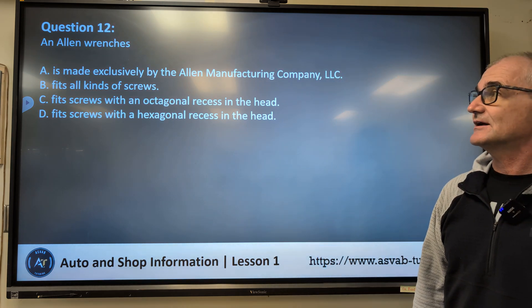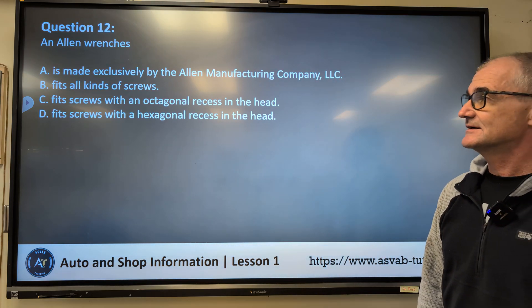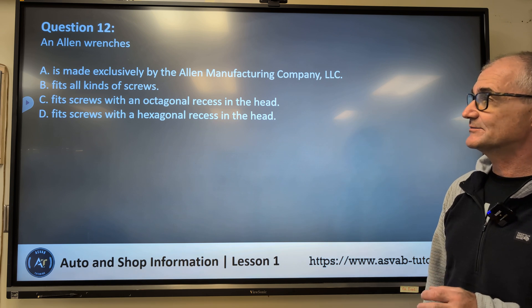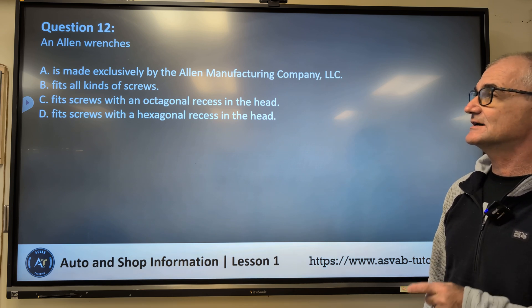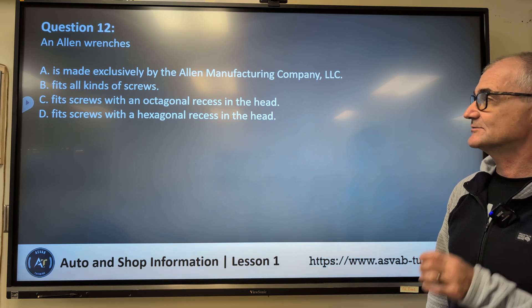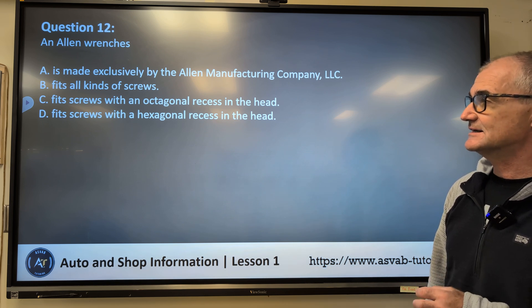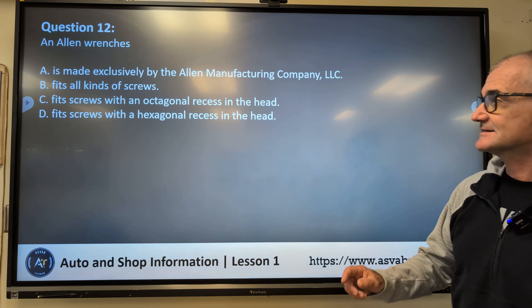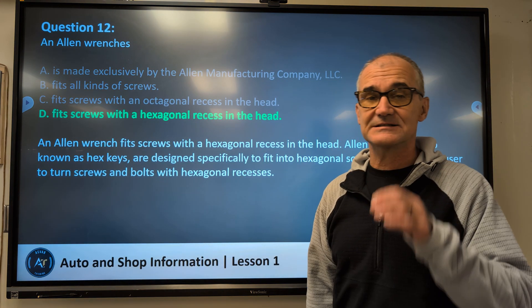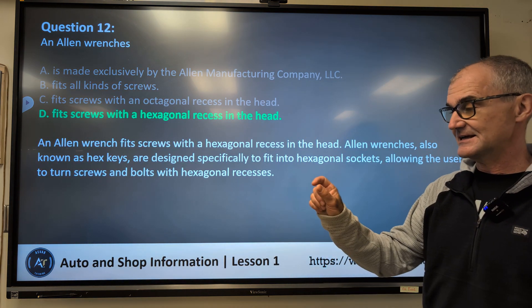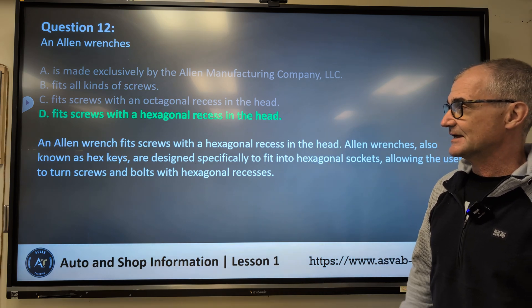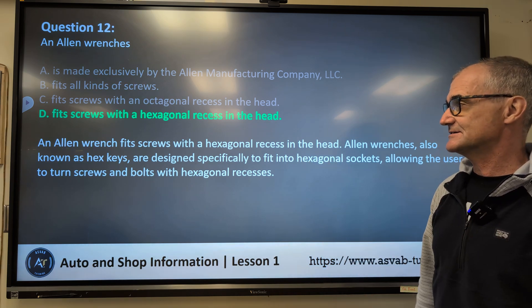Question number twelve: An Allen wrench — A, made exclusively by the Allen manufacturing company; B, fits all kinds of screws; C, fits screws with an octagonal recess in the head; D, fits screws with a hexagon recess in the head? Correct answer is D. An Allen wrench is a hex — six-sided — tool, and they vary in different sizes.